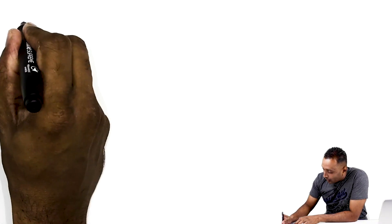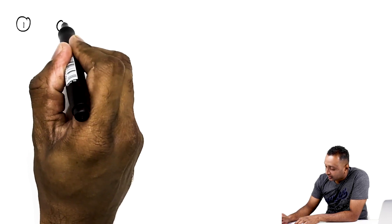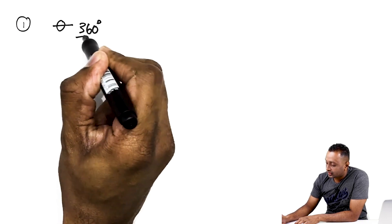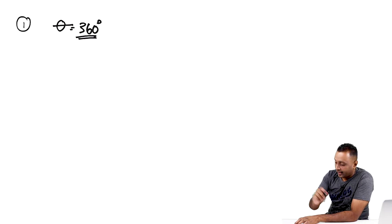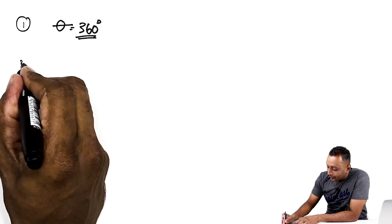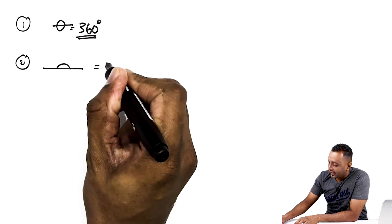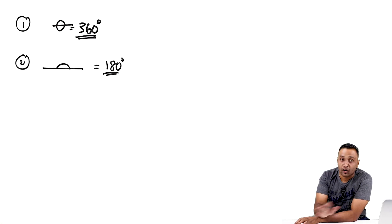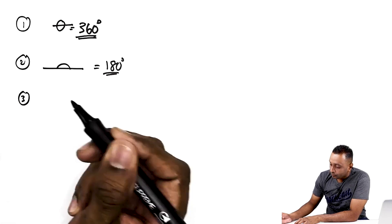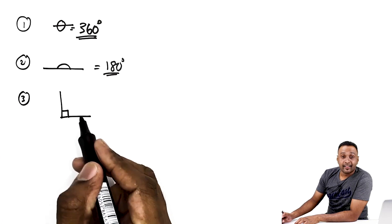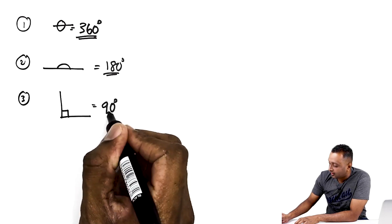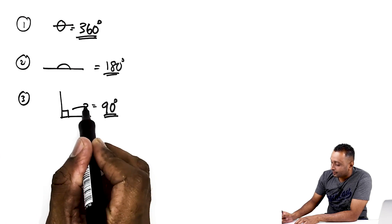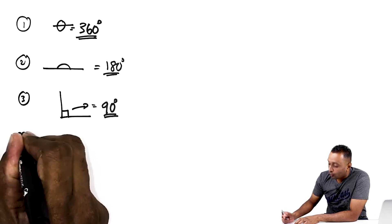Grab a paper and pen and take notes. The basic things you need to know: number one, one full circle consists of 360 degrees. Number two, one straight line gives you 180 degrees — if it's not a straight line, it is not 180 degrees. Number three, when you see the right-angle symbol, that means it is 90 degrees.